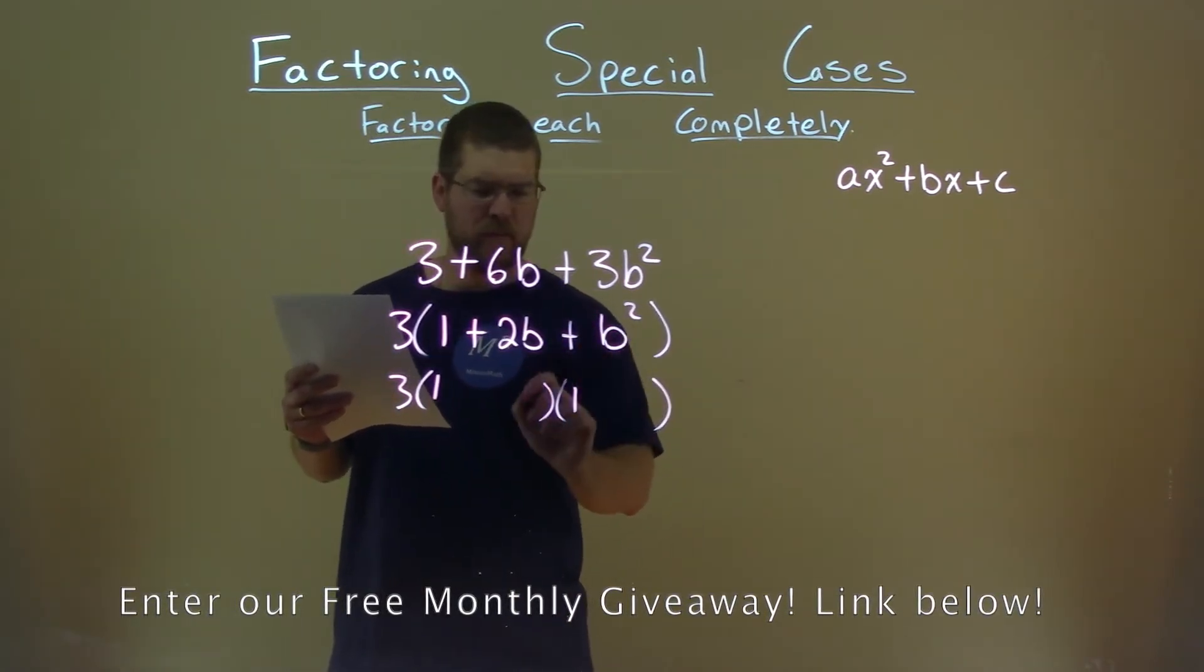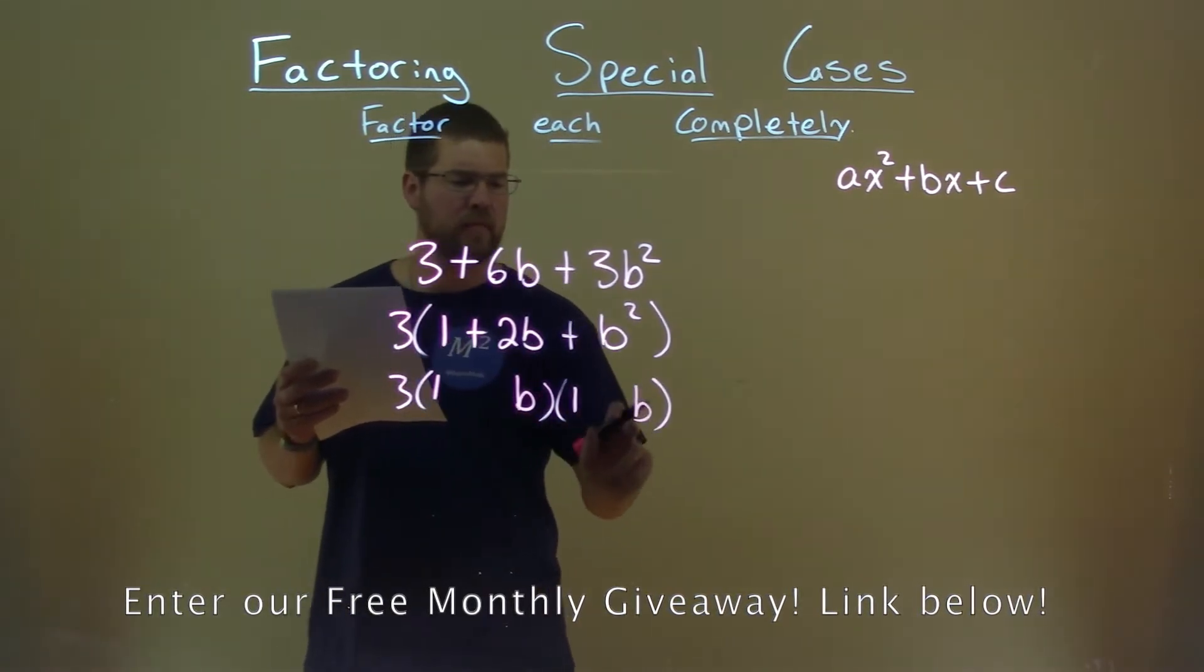b squared is, well, the square root of that is b, so b times a b here. So b times b is b squared.